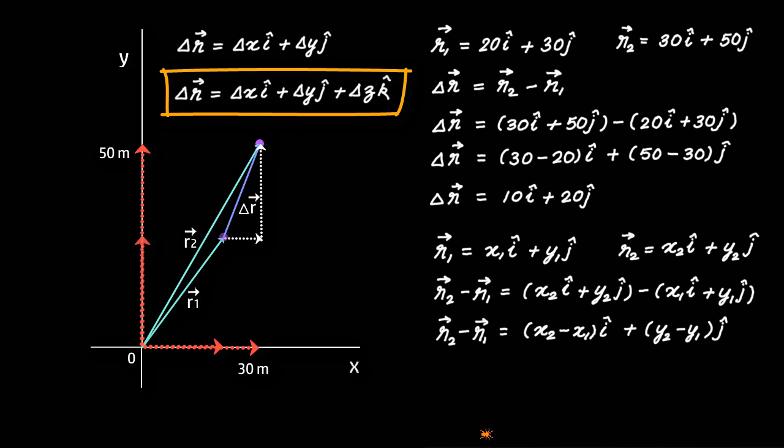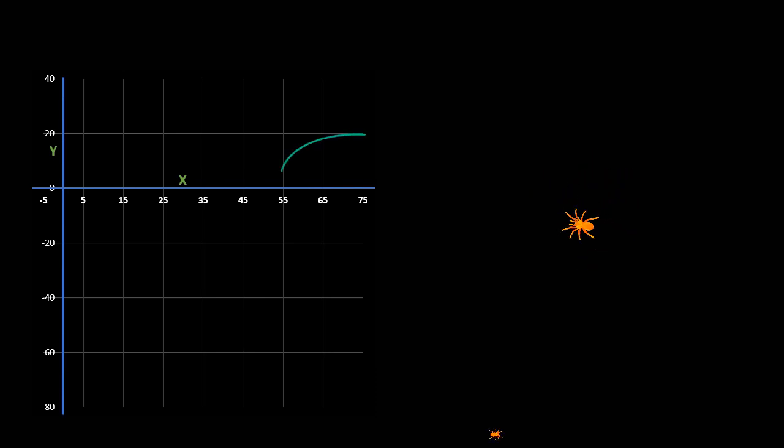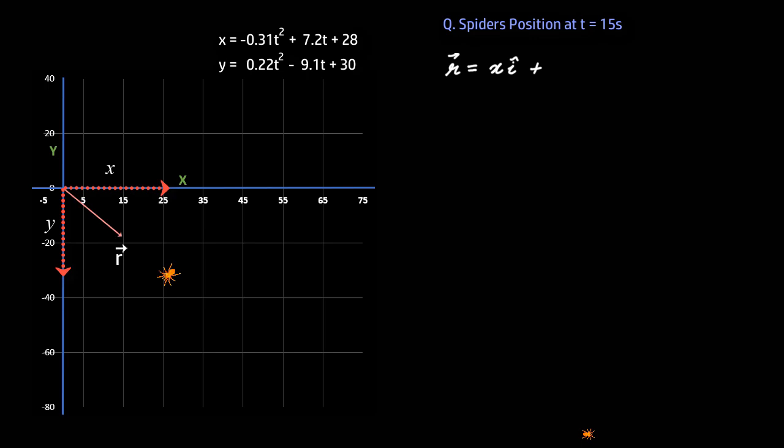Let us do a problem. What we have here is a spider that crawls on a wall. The x and y coordinates of the spider as they change with time are given as x = -0.31t² + 7.2t + 28 and y = 0.22t² - 9.1t + 30. The first question is what is the spider's position at t = 15 seconds. The position vector r can be written as r = xi + yj.